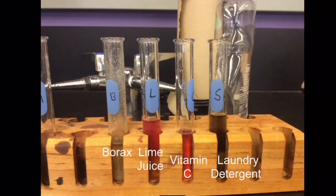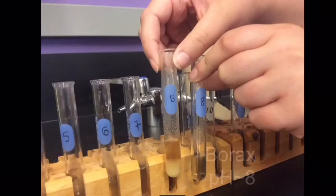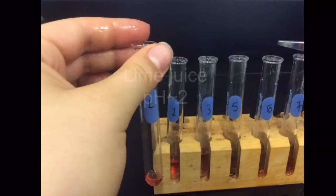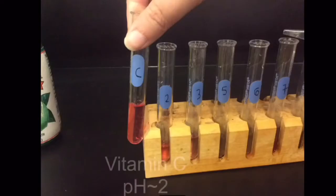Put 10 drops of the cistis indicator into the samples of household items. You find the approximate pH of the substance by comparing it to the colors of the substances of the known pHs.